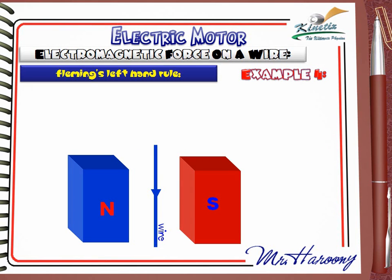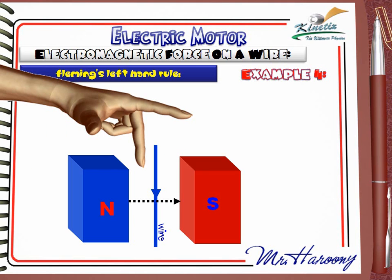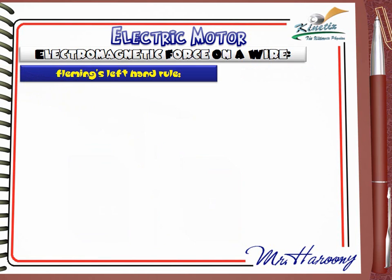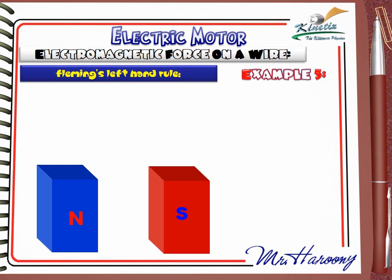Example 4: This is the magnet and this is the wire. The dotted black arrow indicates the direction of the magnetic field from north to south. Applying Fleming's left hand rule: the first finger points to the magnetic field, from left to right. The current given by the second finger is downwards relative to the page. Using the same rule, the wire will also be pushed out of the page, as shown by the thumb.